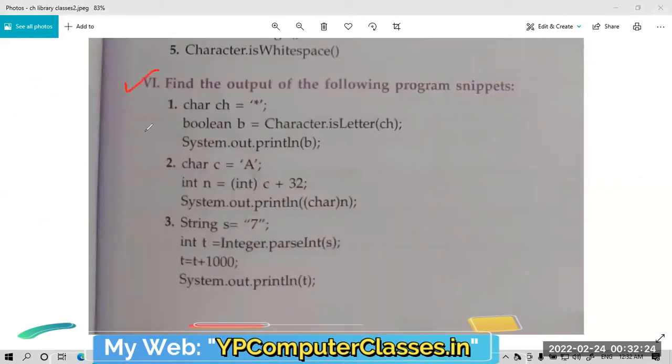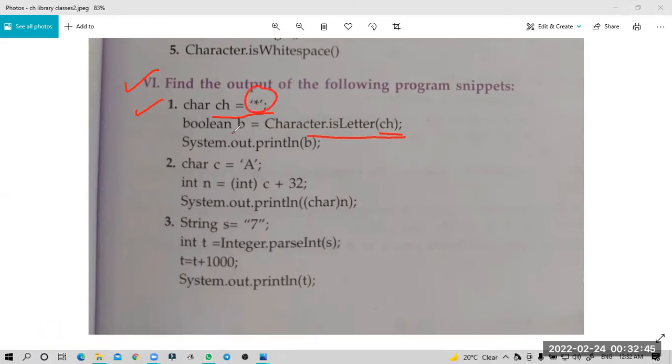First question: char ch equals asterisk, boolean b equals Character.isLetter(ch). The isLetter function checks if the given character is a letter or not. Is asterisk a letter? No, so the answer is false.